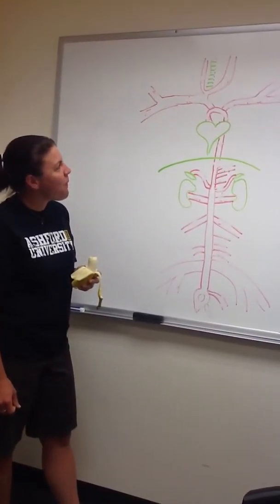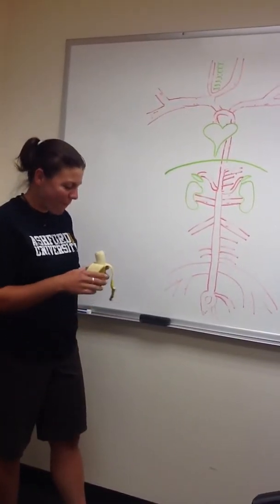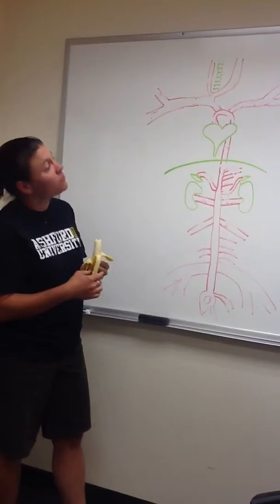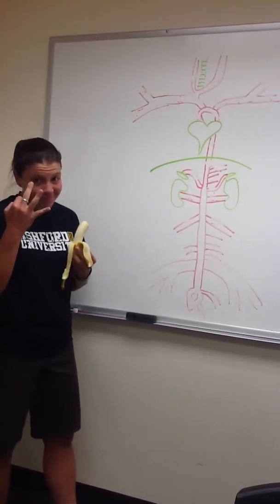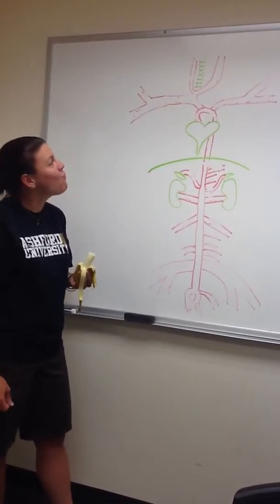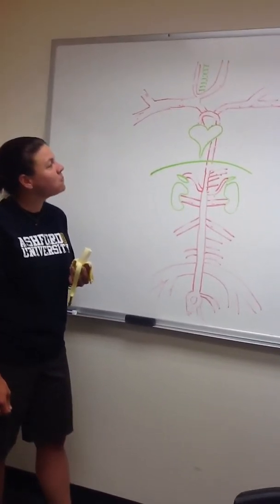Then I found that the subclavian in the thoracic cavity is also the axillary in the armpit and the brachial in the upper arm. This is the same vessel with three names. I was so relieved when I discovered that the brachial divides into the ulnar and the radial at the elbow.